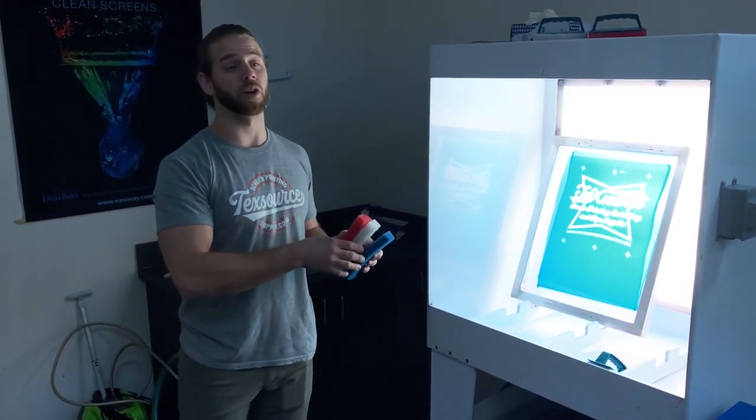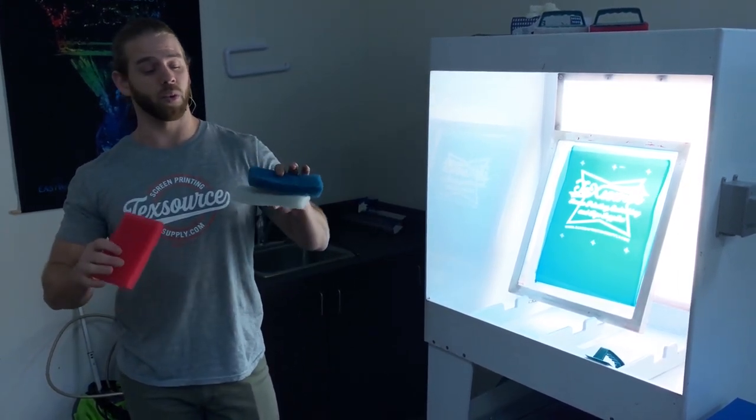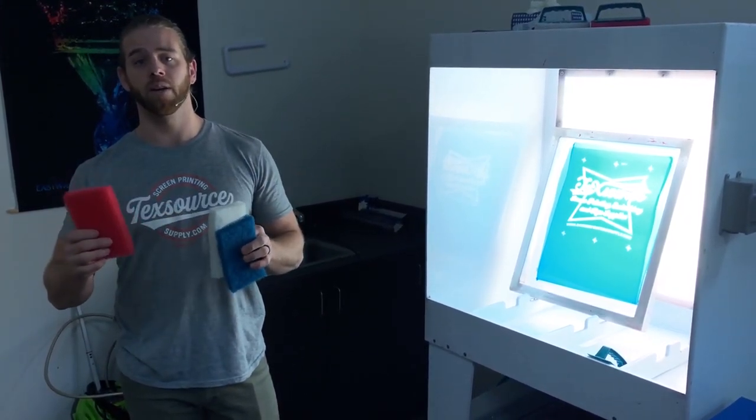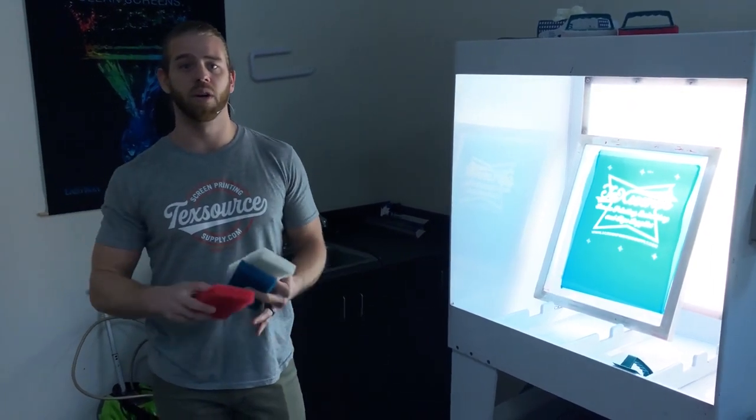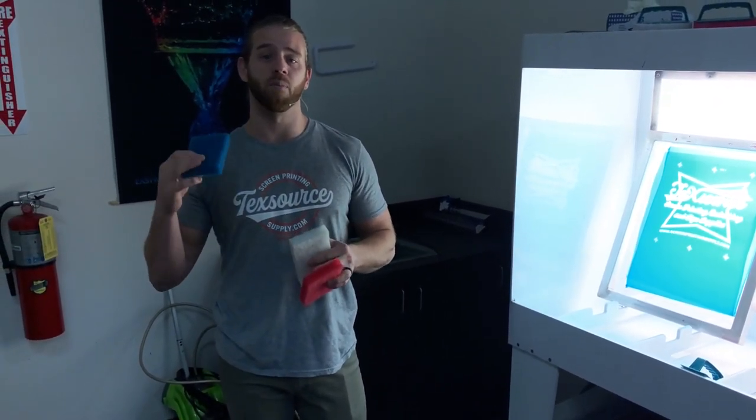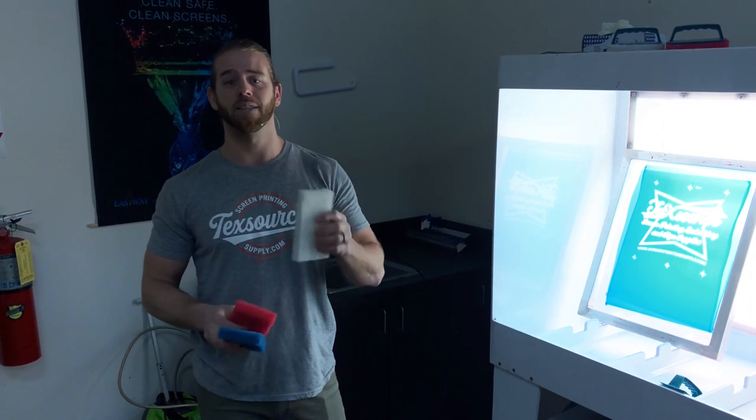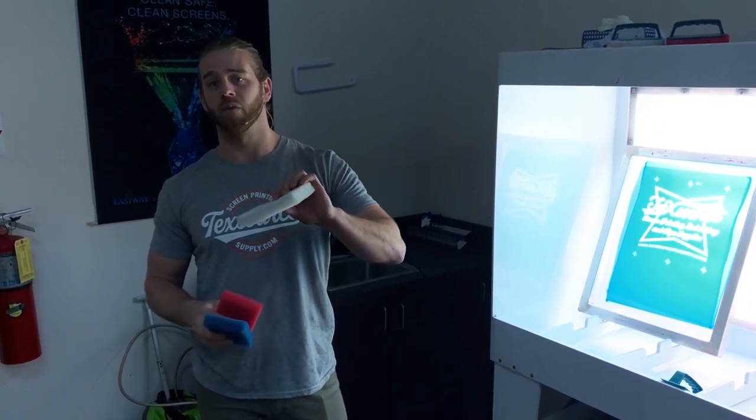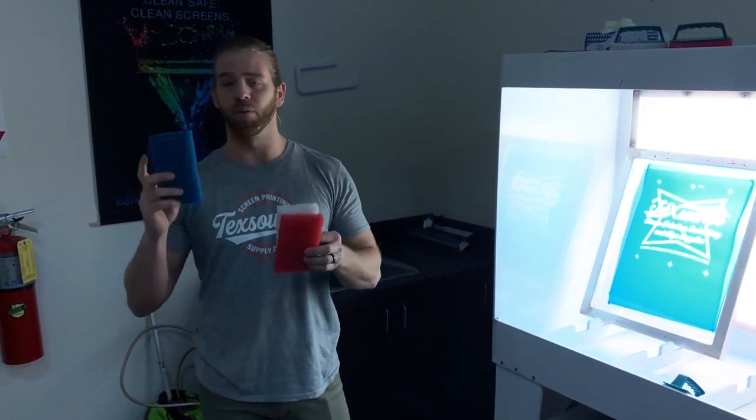We sell three different types of scrub pads: red, which is great for ink removal; blue, which is great for emulsion removal; and white, which is great for degreasing. The difference in these three is that blue is the most coarse, white is the softest, and red is the middle of the two.